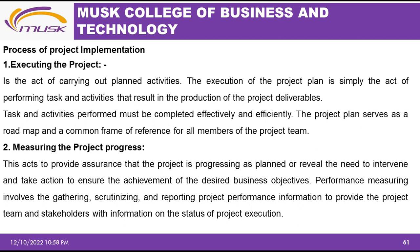The second process step is measuring project progress. This provides assurance that the project is progressing as planned, or reveals the need to intervene and take action to ensure the achievement of desired business objectives. Performance measuring involves gathering, scrutinizing, and reporting project performance information to provide the project team and stakeholders with information on the status of project execution.